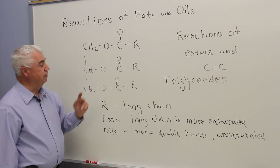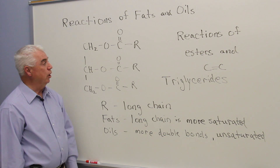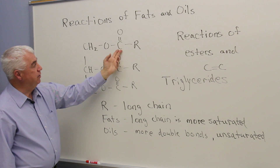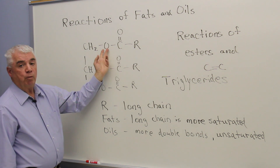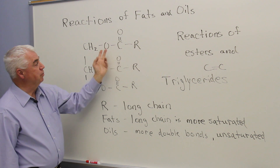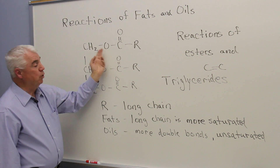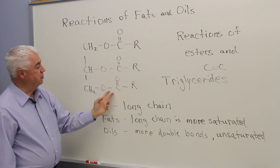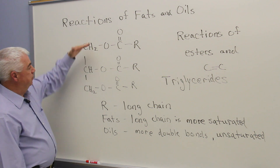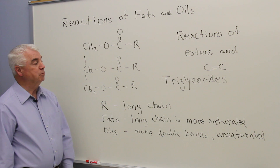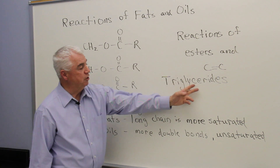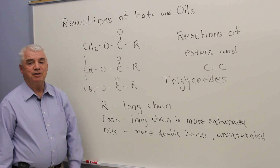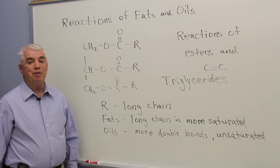Here I've got the structure of a typical fat and oil. They're both triesters. You can see this ester linkage right here — it's written in a reverse way from what you might be familiar with. Here's the C double bond O, and I've put the O on this side. There are three of these esters, so we call it a triester. This portion of the molecule comes from glycerol, and so sometimes we call fats and oils triglycerides. R is our symbol for the rest of the molecule.